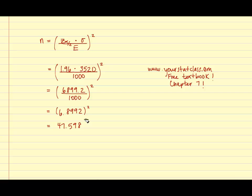Recall that with sample size formulas, we always round up to the next highest number. So we're going to round this up to 48. Thus, the sample size needed to estimate the true population mean selling price of a home to within $1,000 and being 95% confident is 48.